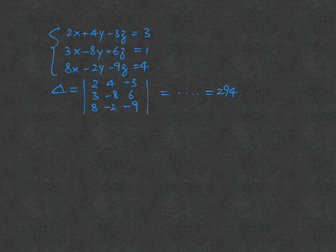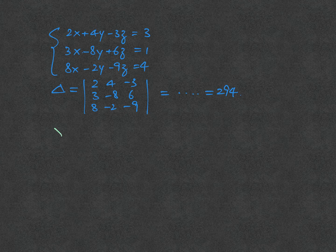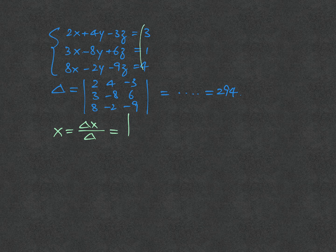Afterward, we start finding x. x will be written horizontally here, so it's delta x over delta. For delta x, you replace the numbers 3, 1, 4 in the first column, because it's the column of x.